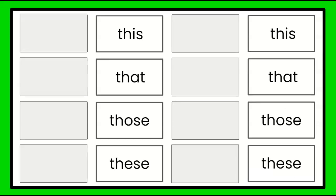Eggs. Well, eggs is more than one, so that means it's plural. And those dotted lines — what did those dotted lines mean again? That it's farther away. So what was the determiner we could use for far away and for more than one? That's right — those. Those eggs.